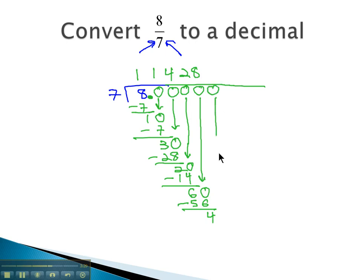Add another 0. You never run out of 0s. 7 goes into 45 five times, because 7 times 5 is 35.